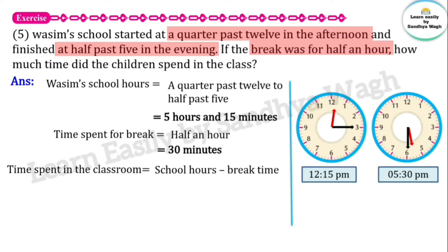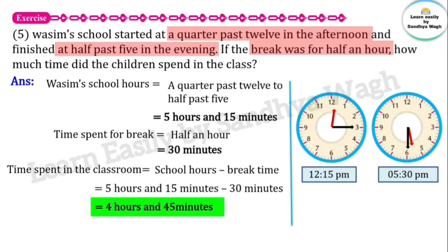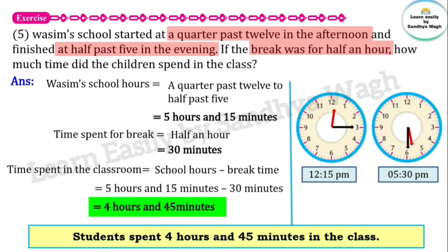Time spent in classroom equals school hours minus break time: 5 hours 15 minutes minus 30 minutes equals 4 hours and 45 minutes. So our final answer is: students spent 4 hours and 45 minutes in the class.